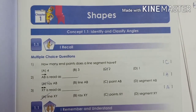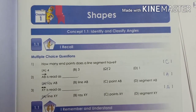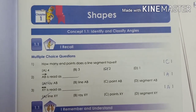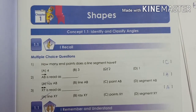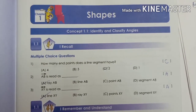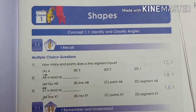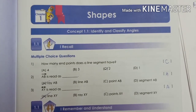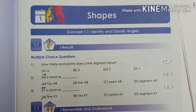I hope these concepts were clear to you. Let us solve some workbook questions now. Kindly open page number 1 in your workbook. Look at the 'I Recall' questions. Question number 1: How many end points does a line segment have? Option A: 4, Option B: 3, Option C: 2, Option D: 1. Recall that from the definition, a line segment has two end points. So the right option is Option C, 2.